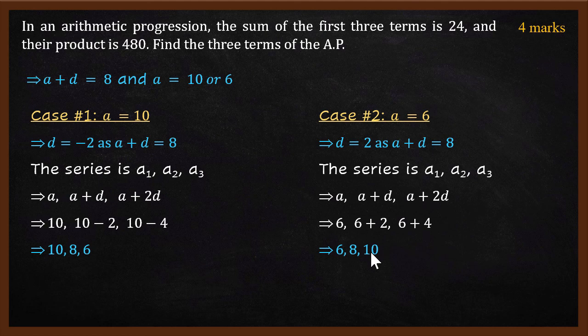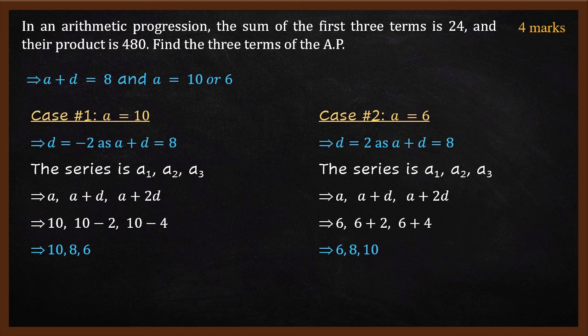So for this question there are actually two answers: the AP can be 10, 8, 6 or 6, 8, 10. Both sequences satisfy the Arithmetic Progression conditions. Hopefully you have understood how to solve this problem. Thanks for watching this video. See you in the next video. Bye!